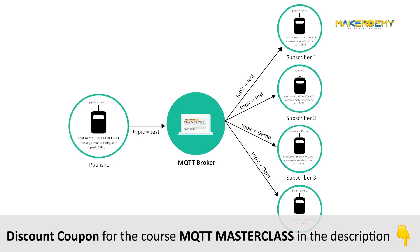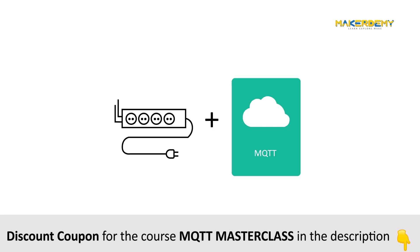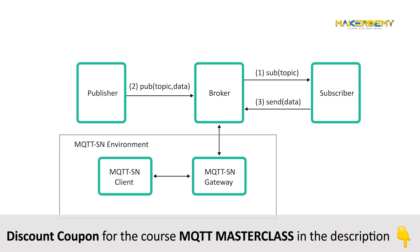Another close contender to MQTT is an asynchronous protocol called AMQP. But this is specifically used in high-performance computation with reliability and interoperability in enterprise applications. It has a rich feature set, but it is not suitable for resource-constrained IoT applications. Besides AMQP, there are other popular messaging protocols. For example, XMPP is a peer-to-peer instant messaging protocol. It is heavy on features that support instant messaging use cases, such as presence and media attachments. Compared with MQTT, it requires much more resources both on device and on the network. Thus, the main advantage of MQTT is due to its publish-subscribe model.